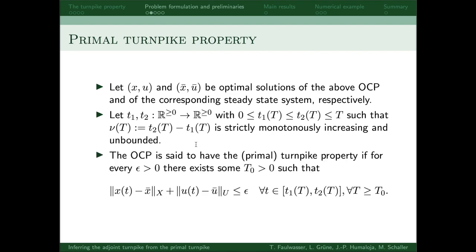Then, the OCP is said to have the primal turnpike property if for every positive epsilon, there exists some positive T0 such that the distance between the solution of the OCP and the turnpike, x bar u bar, is at most epsilon for all time instances on this interval when T is large enough.